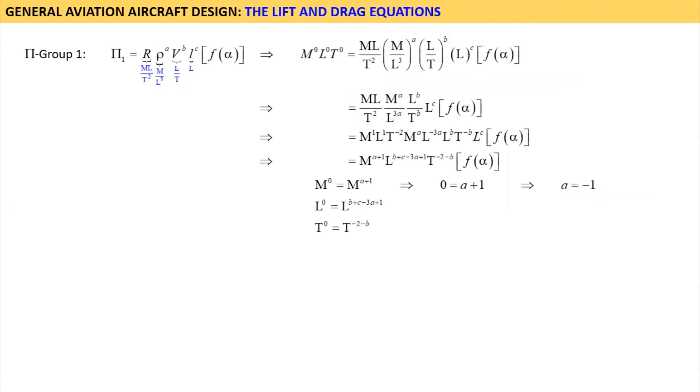Thus, let's first solve the bottom equation for T. The condition for T requires that zero is equal to minus B minus 2. Therefore, B must be equal to minus 2. Substituting the known values of A and B into the center condition results in C being equal to minus 2.